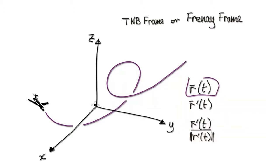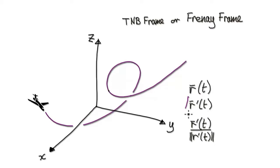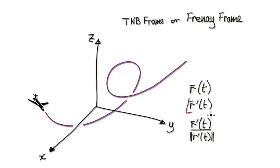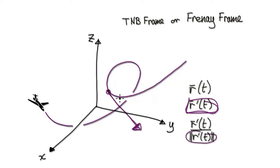To recap: you start with your position vector, which tells you the location of the plane as it moves along. If you differentiate the position vector, it will give you your tangent vector, always in the direction of motion. Divided by its magnitude, it will then give you your unit tangent vector.